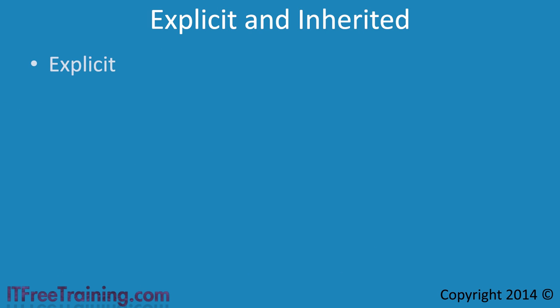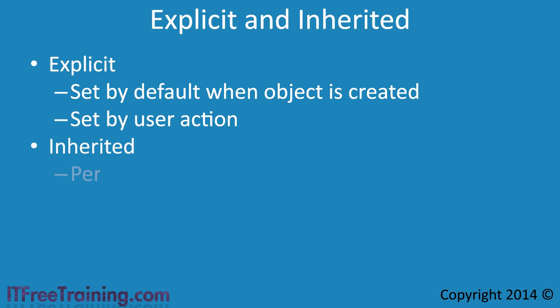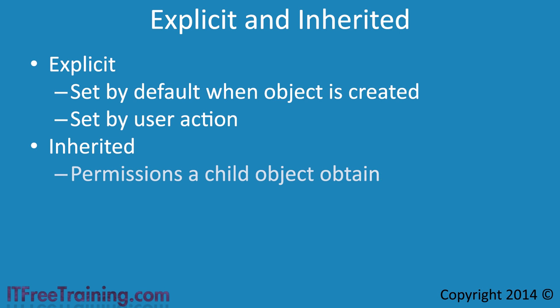Explicit permissions are set when the object is first created or set by user action. Inherited permissions are permissions a child object obtains from a parent. For example, a file may obtain permissions from its parent folder or a subfolder may obtain permissions from its parent folder.